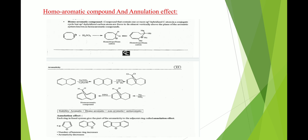The annulation effect means that if a compound contains more than one benzene or aromatic ring, each ring transfers its aromaticity to the neighboring ring. In short, as the number of rings increases, aromaticity decreases. For example, comparing one, two, and three aromatic rings — each ring shares its aromaticity with the neighboring one, so aromaticity progressively decreases from benzene to naphthalene to anthracene.